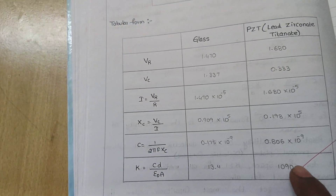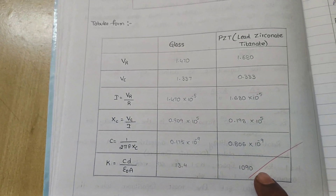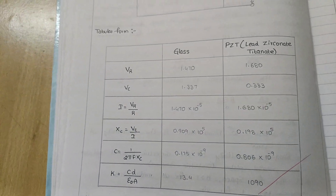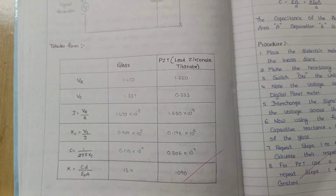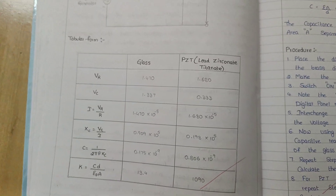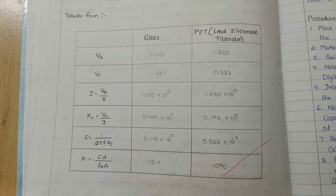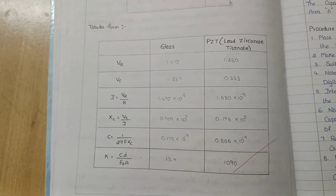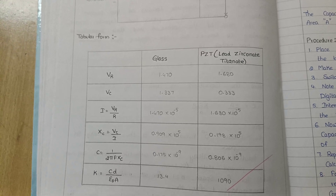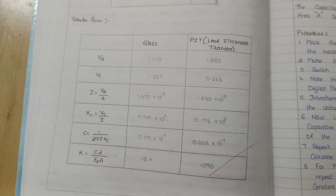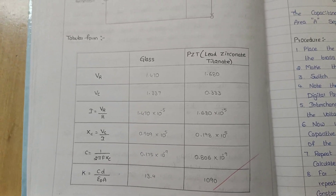The results: for glass, the dielectric constant is 13.4, and for PJT we got 1090. This is all about the dielectric constant of glass and PJT material. Similarly, we can calculate for different materials such as Teflon and acrylene. Thank you.